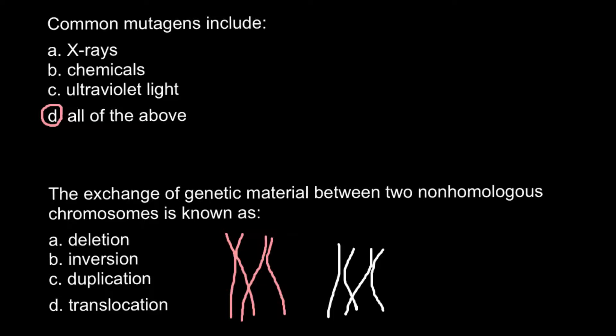But imagine that this time we have another situation, when two sister chromatids base pair with a different chromosome. For example, chromosome number two - so this is number one, this is number two, and number one once again. So this is another example, and they would base pair with non-homologous chromosomes.